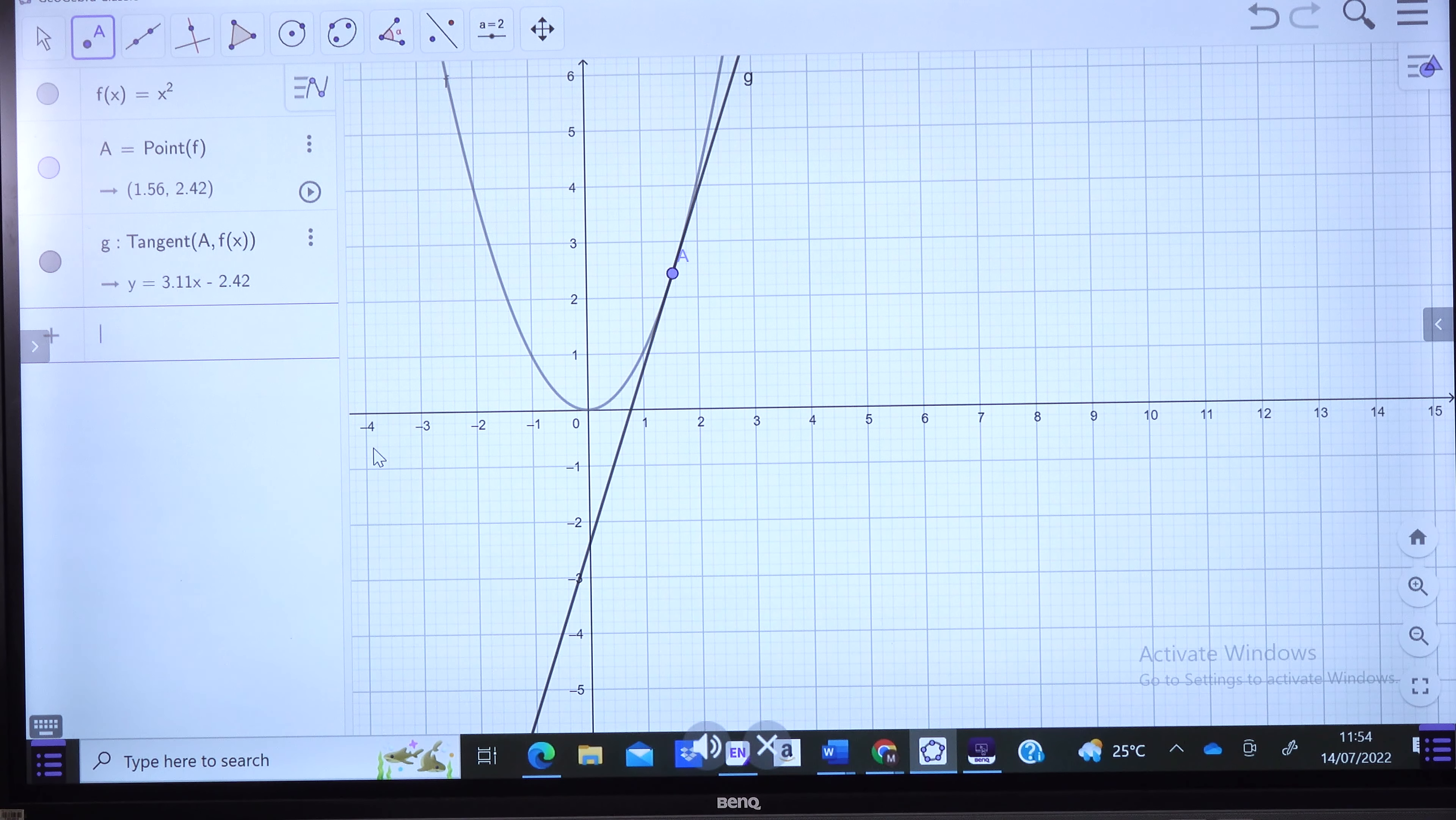Now, what is the slope of this graph? And we know that any straight line has a slope. So the slope of this graph, this line, and our line in this case is line G, can be seen as 3.11.